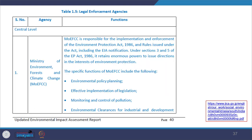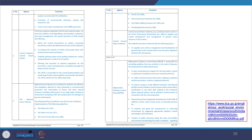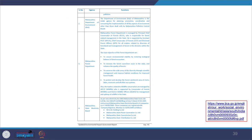The institutional framework identifies the Ministry of Environment and Forest as the key institution, the Central Pollution Control Board and the National Green Tribunal, the Central Ground Water Authority, and state-level agencies like the Maharashtra Pollution Control Board. All these have been listed in the EIA report for reference.